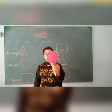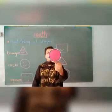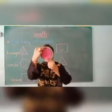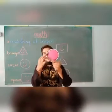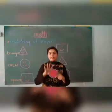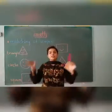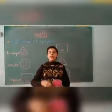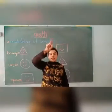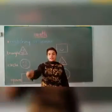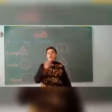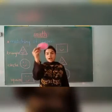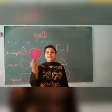Which shape is this, kids? It is circle. Circle is round and round. Circle has no sides. Circle ki koi corners, koi sides nahi hota hai — circle is just round. Bilkul gol hota hai. Circle has no sides. Well done. This is our first basic shape, which is circle.